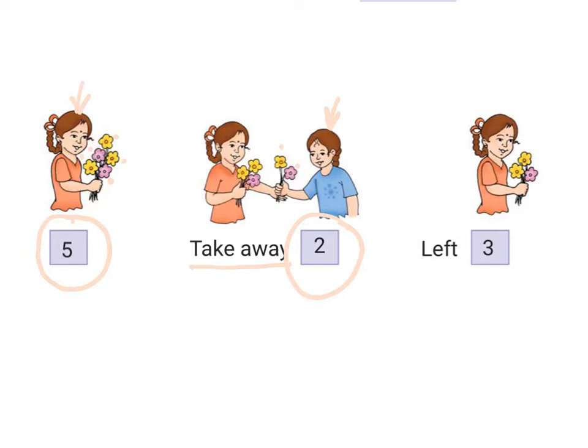So how many flowers are left with Gita? Let's count. 1, 2, 3. That's right. There are 3 flowers left with Gita.